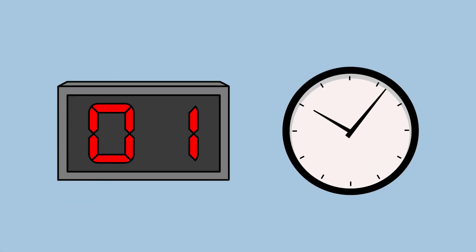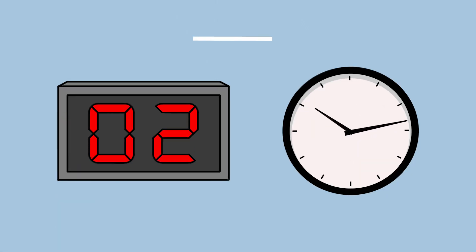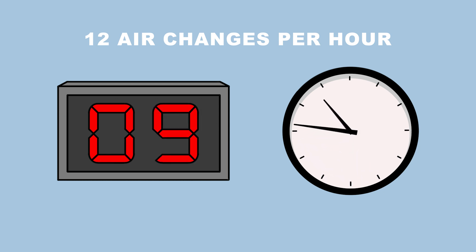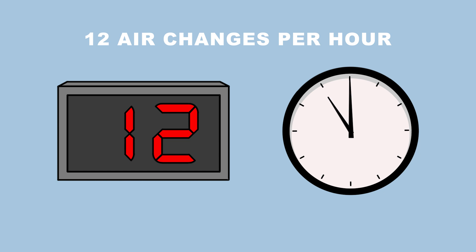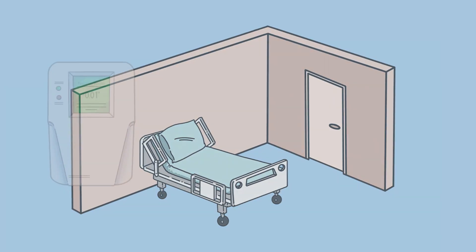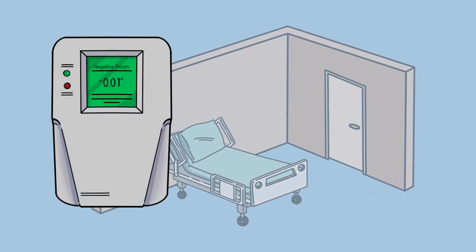AII rooms have a high air change rate at 12 air changes per hour, meaning that they fully replace the air within the room 12 times each hour. These specialized rooms are also required to maintain at least negative 0.01 inches of water column pressure at all times while occupied.